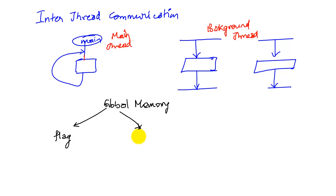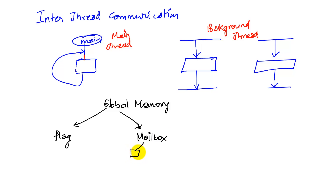The second method is a little more substantial — we will communicate using what I call a mailbox. A mailbox involves actual data being communicated along with a state, so we use two global variables: one for data and one for status.